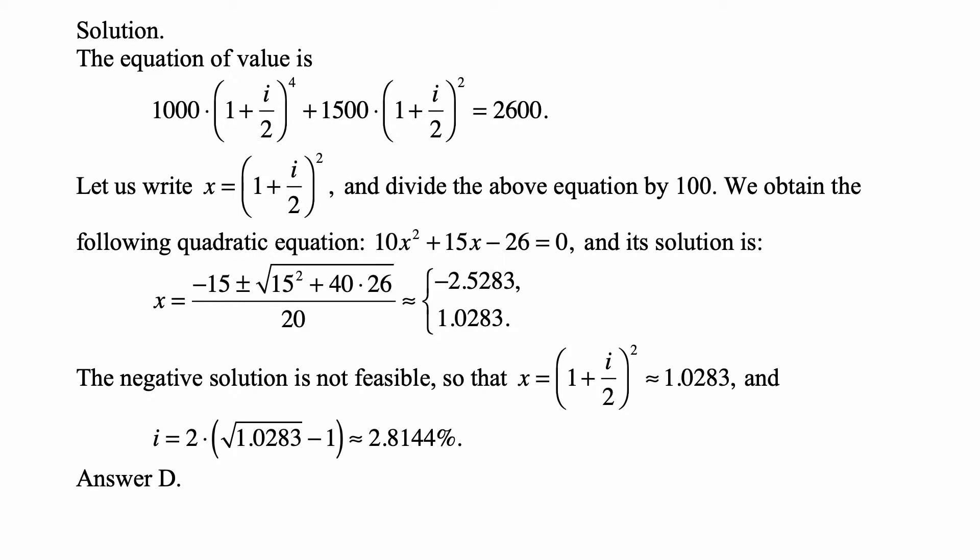The equation of value is that 1,000 times (1 plus I over 2) to the fourth — because of semiannual compounding — plus 1,500 times (1 plus I over 2) squared is equal to 2,600. Let us write x for (1 plus I over 2) squared, and divide the above equation by 100. We obtain the following quadratic equation.